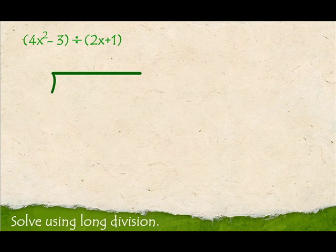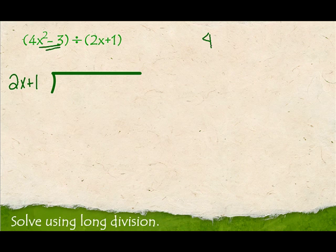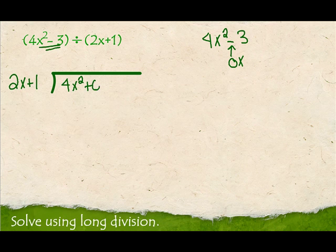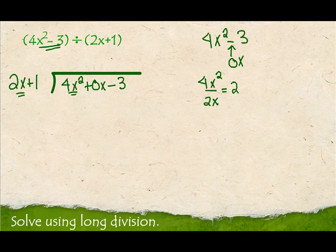Let's solve another example using long division. The divisor, 2x plus 1, goes out front, and the dividend goes on the inside. But notice — 4x² minus 3 has to be in descending order, and I'm missing an x term. So I'm going to write it as 4x² plus 0x minus 3, showing that I have zero x's. From there, we take 4x² divided by 2x — 4 divided by 2 is 2, and x² divided by x is x — giving me 2x.